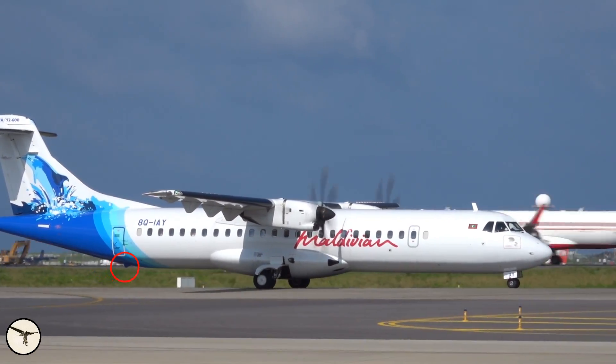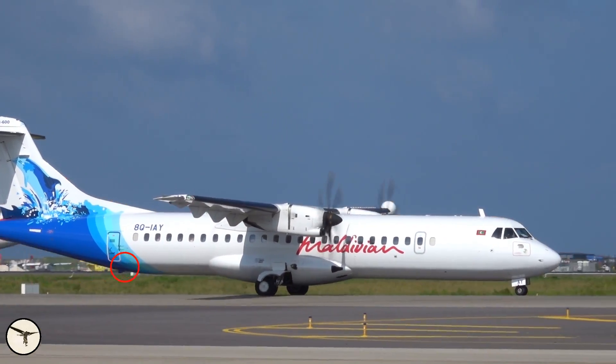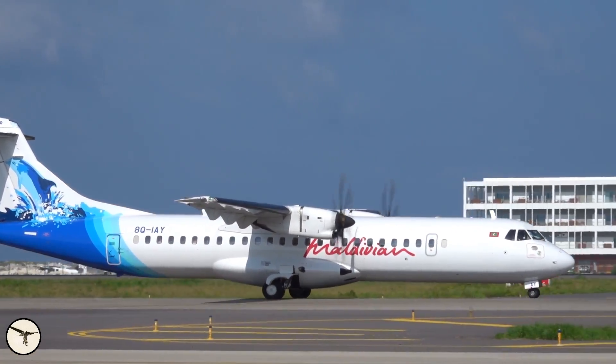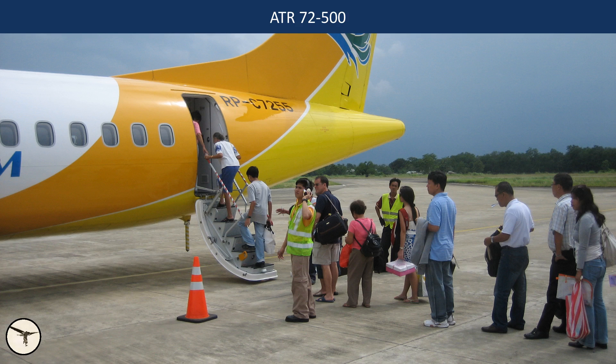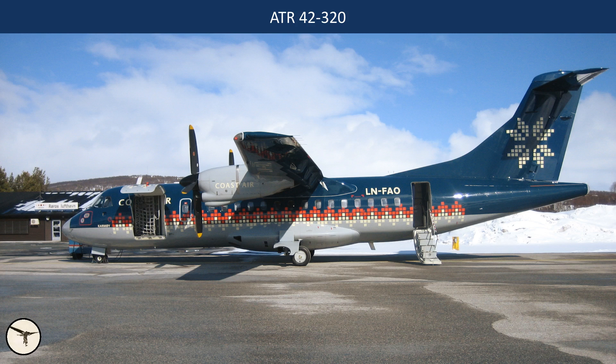The ATR 72 has a tail bumper. When the aircraft is parked, a tail probe is attached to the bumper, as the aircraft might tip on its tail if the aft part of the aircraft is loaded before the forward part. The ATR 42 is shorter and doesn't need this.